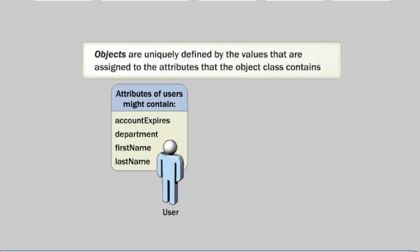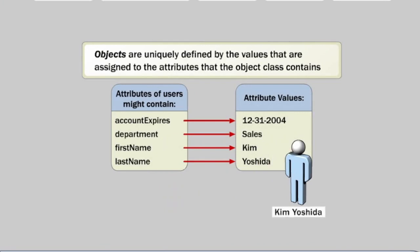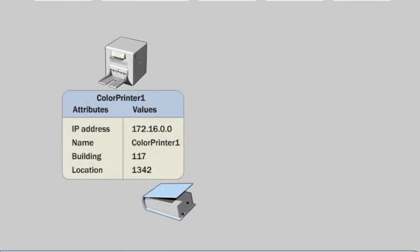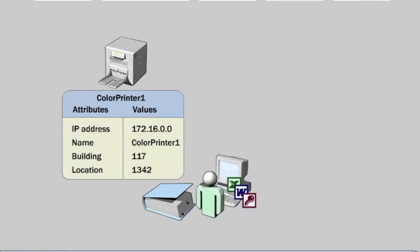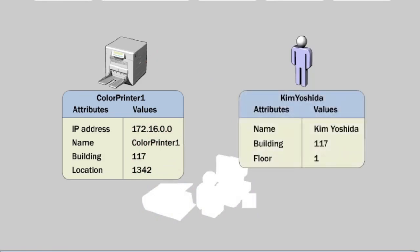An object is uniquely defined by the values that are assigned to the attributes that the object class contains. Because Active Directory stores information about objects as attribute values, users and applications can easily find the objects that are associated with specific attribute values. For example, a user can search for the printer closest to her desk by searching for a printer that has a building value and location value that match her floor in her building.